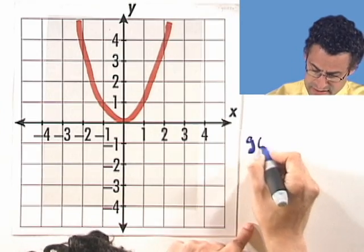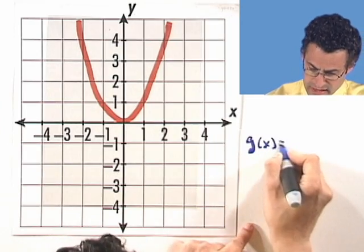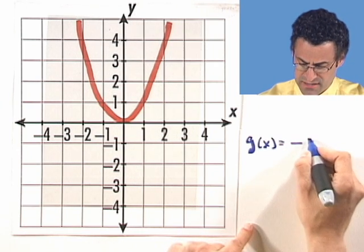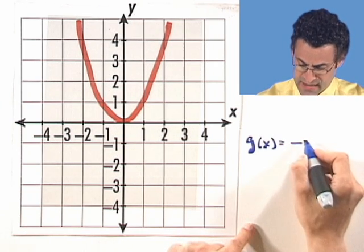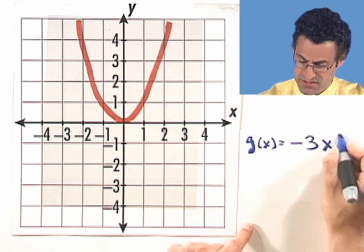All right, now let's take a look at some new parabolas that we generate via what are called vertical stretches. That's where we take the x squared and actually put a coefficient in front of it. So the first function I want us to look at is g of x equals negative 3x squared.